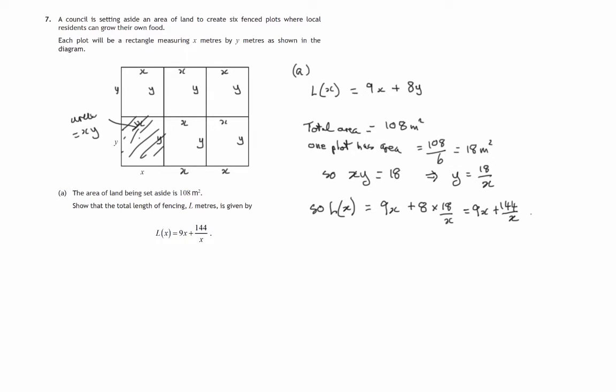So let's now have a look at part b. We've defined the value of x that minimizes the length of fencing required. So we're into a calculus problem where we're trying to differentiate to find a stationary point, show it's a minimum.